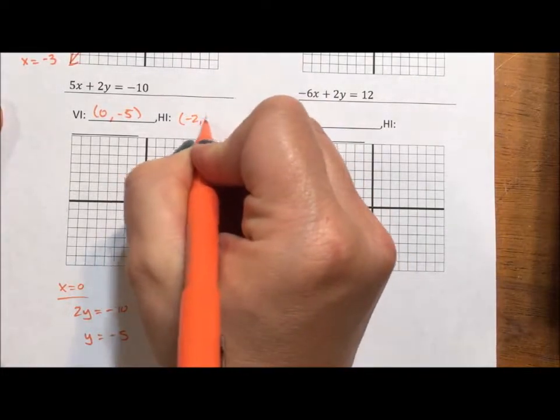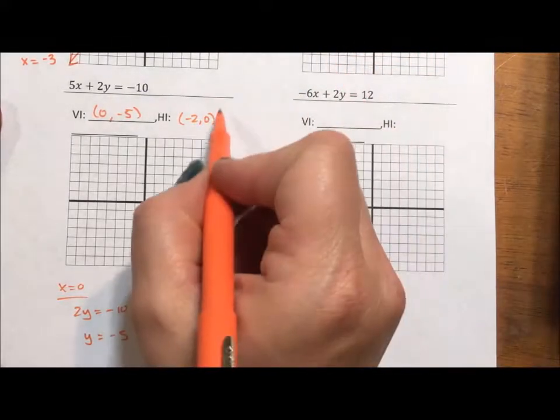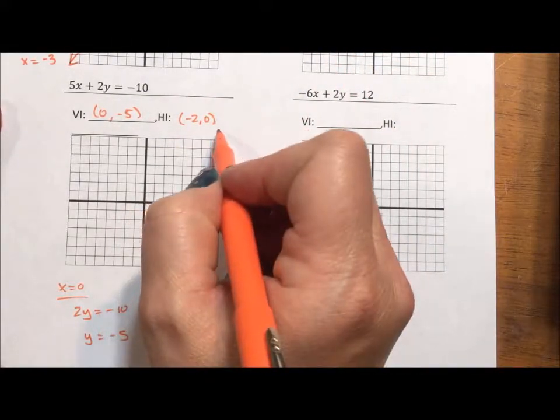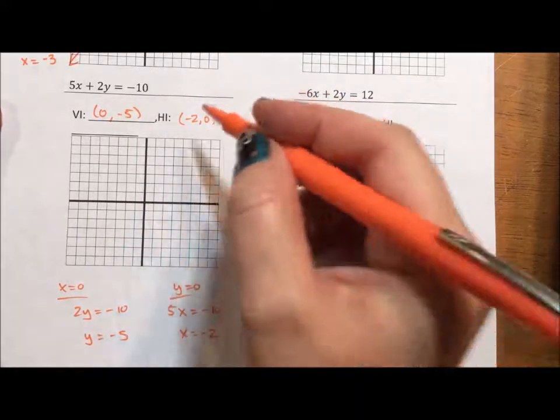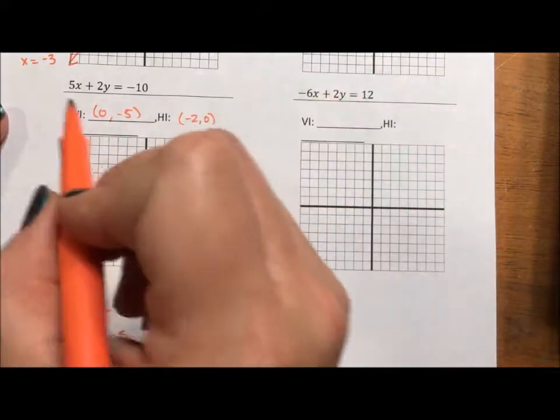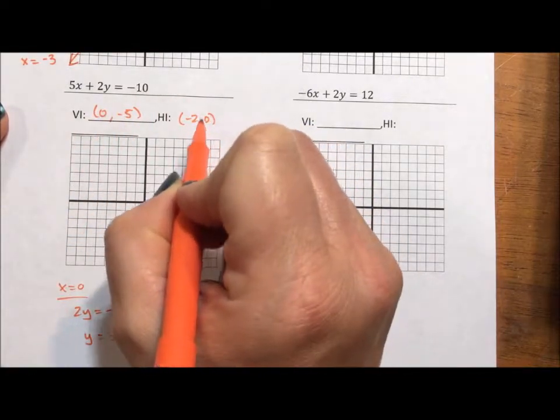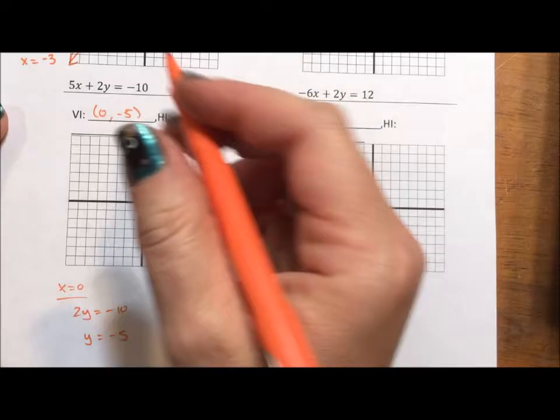Notice that when I write intercepts, I do it with the parentheses and the zeros. Otherwise, the numbers don't have meaning. I really think all ordered pairs, all intercepts, everything needs to be written with the parentheses, comma delimited, zeros. So I know you know that the x value is 0 for the vertical, and I know you know that the y value is 0 for the horizontal intercept.